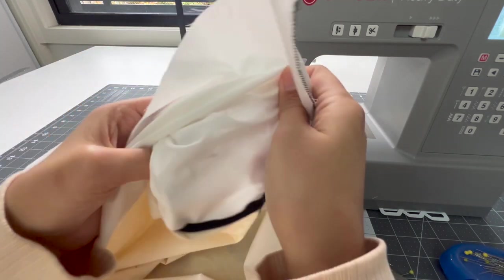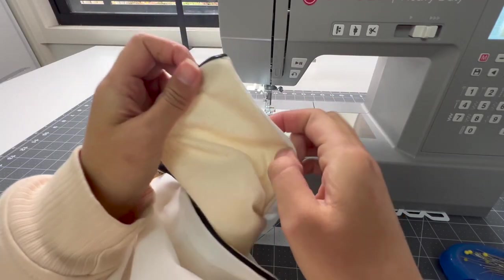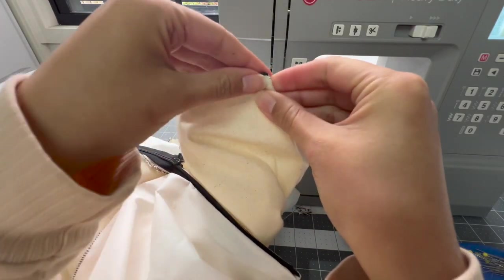So I'll show you what that looks like now once we turn it out. You can see there we've got the edge and it's quite clean because we removed that excess bulk.